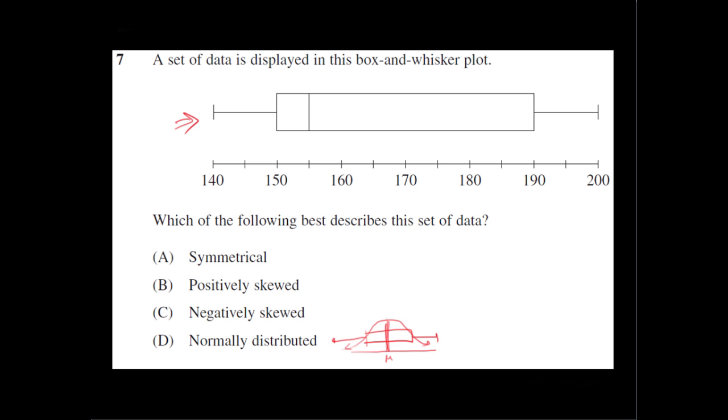Whereas here, the negatively skewed graph would look something like this. So this is the negative side, this is the positive side. So it would be bunched—the data would be bunched up on the positive side, and it would thin out on the negative side. So that's negatively skewed.